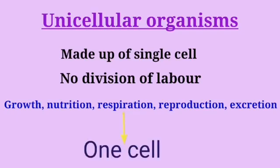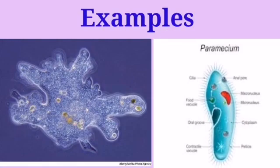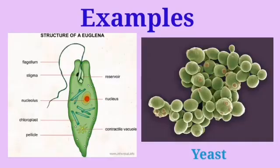Can you think of some examples of unicellular organisms? Yes, amoeba, paramecium, euglena, yeast are few examples of unicellular organisms.